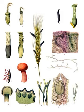Ergot, or ergot fungi, refers to a group of fungi of the genus Claviceps. The most prominent member of this group is Claviceps purpurea, the rye ergot fungus. This fungus grows on rye and related plants, and produces alkaloids that can cause ergotism in humans and other mammals who consume grains contaminated with its fruiting structure called ergot sclerotium.